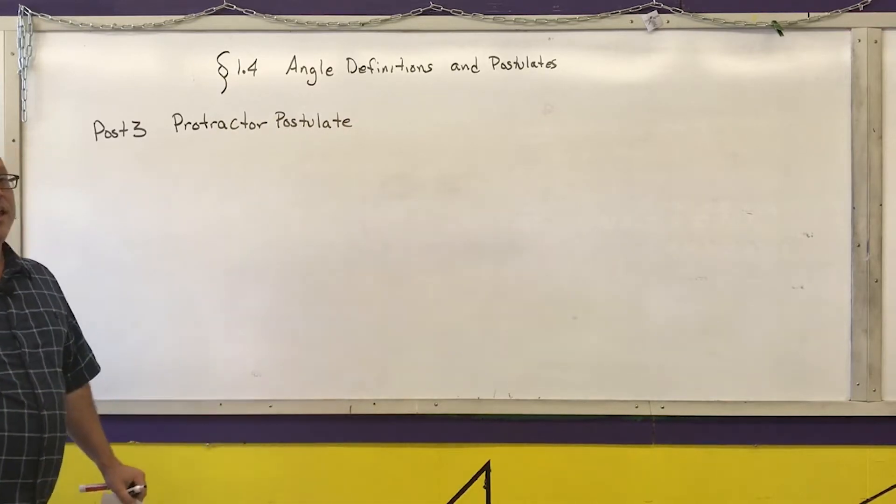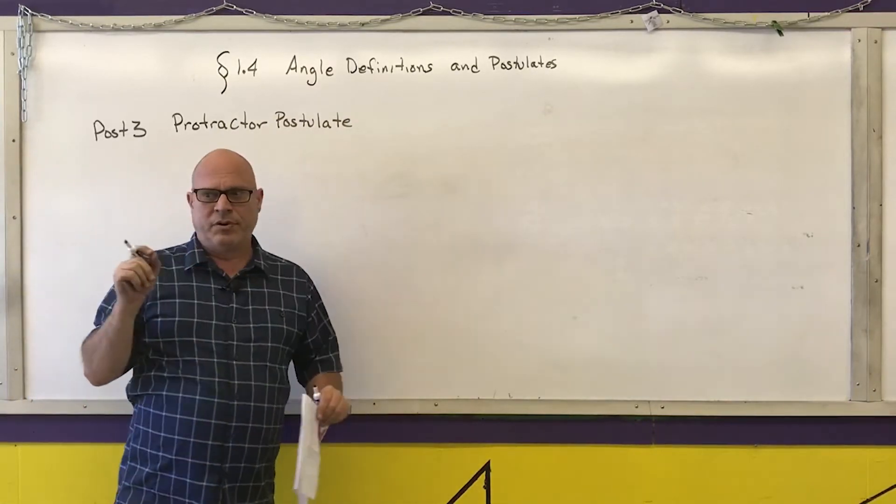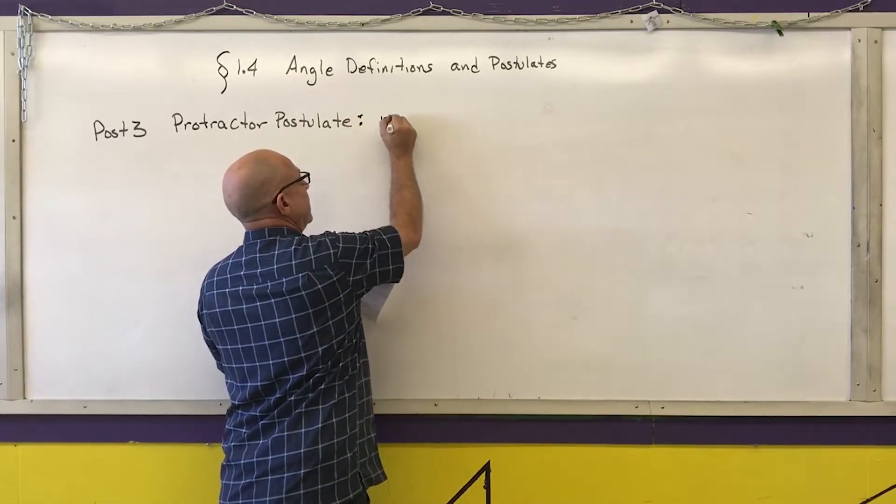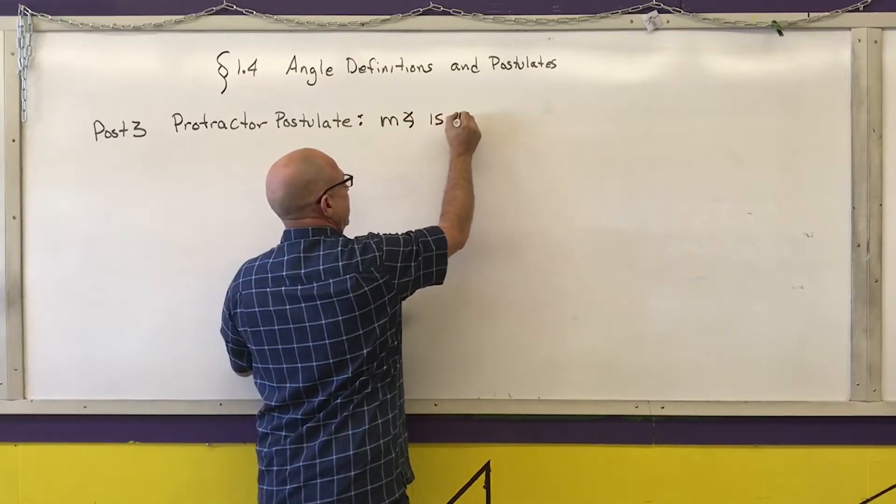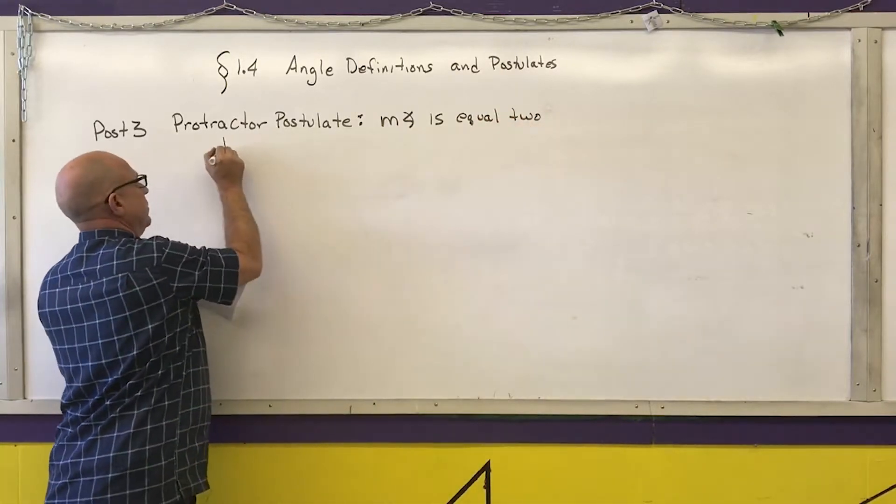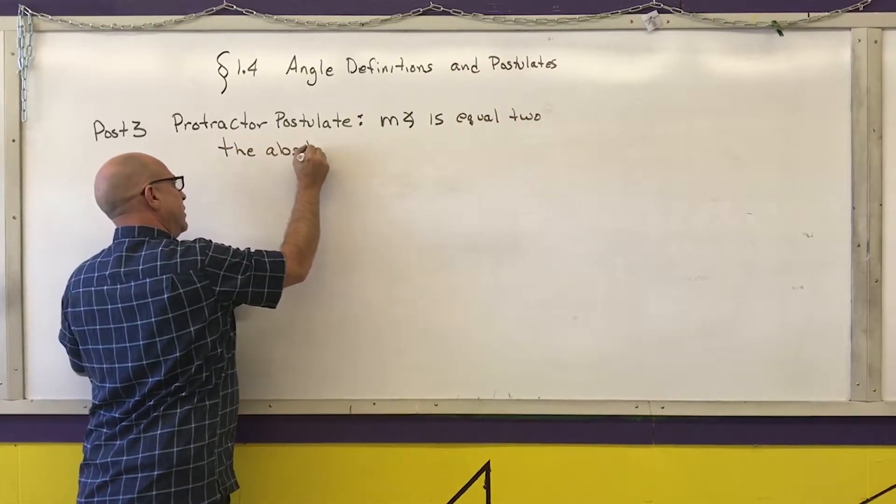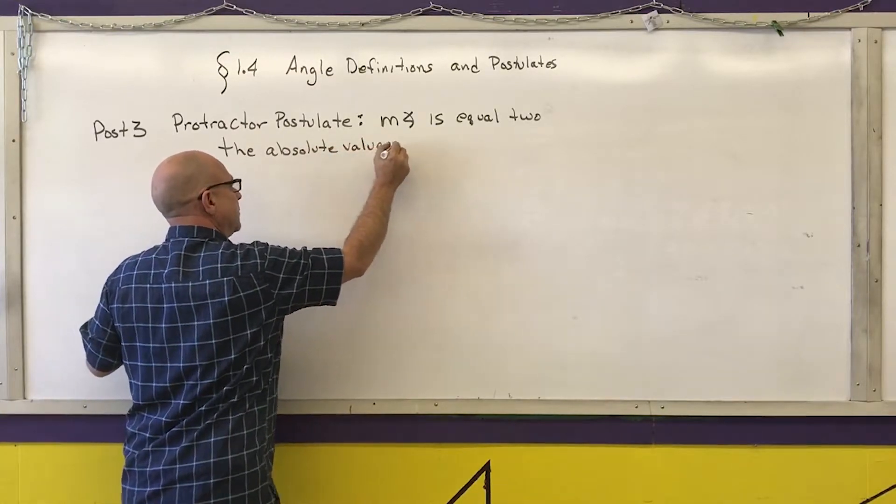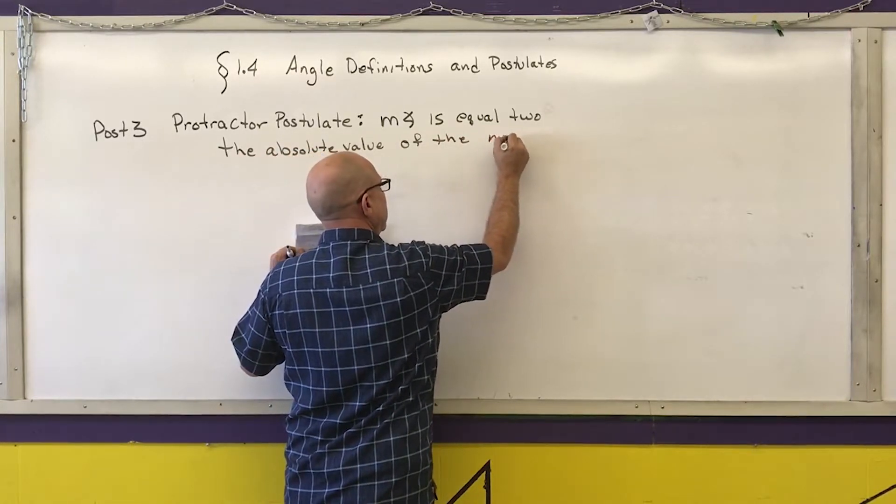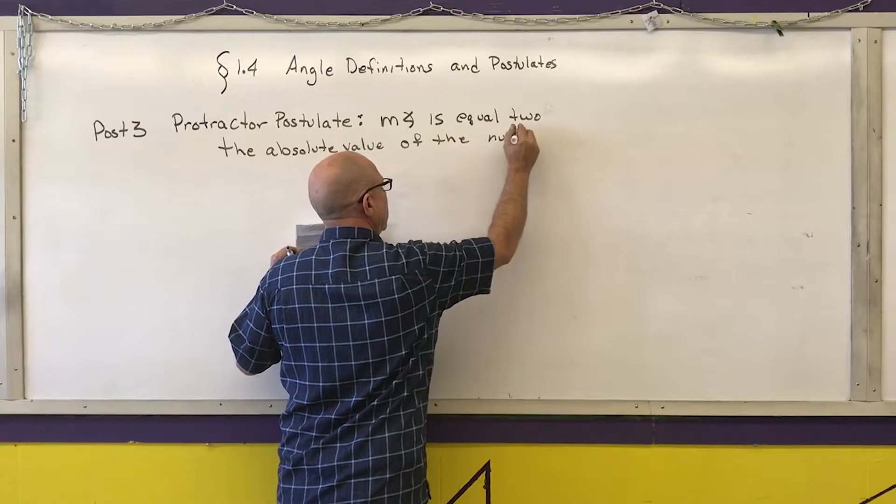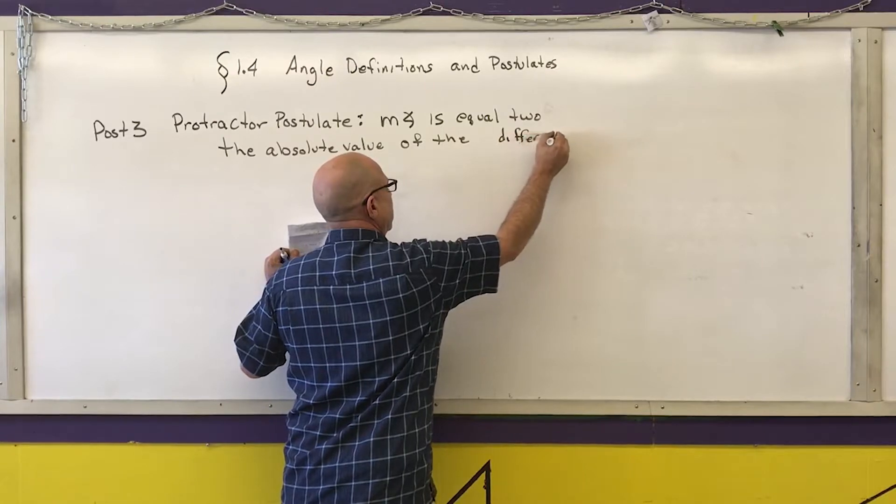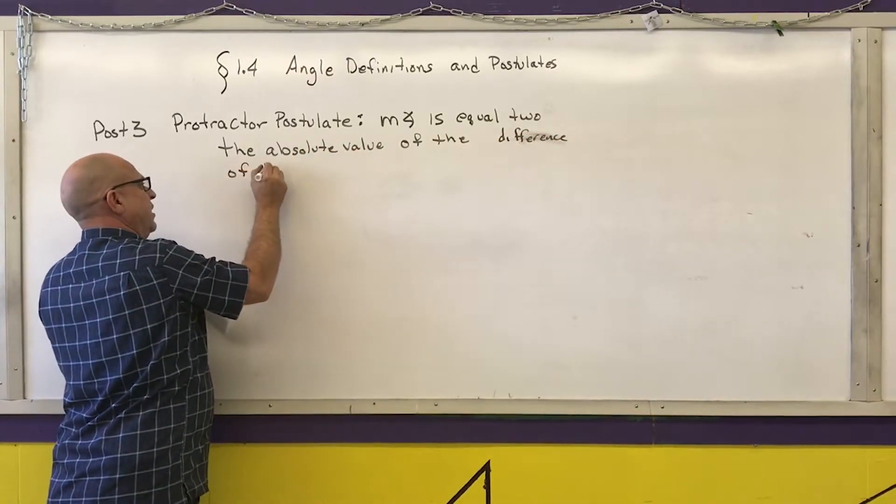And what it says is that if I put the middle of the protractor at the vertex, that the measure of an angle is equal to the absolute value of the two numbers of the difference.